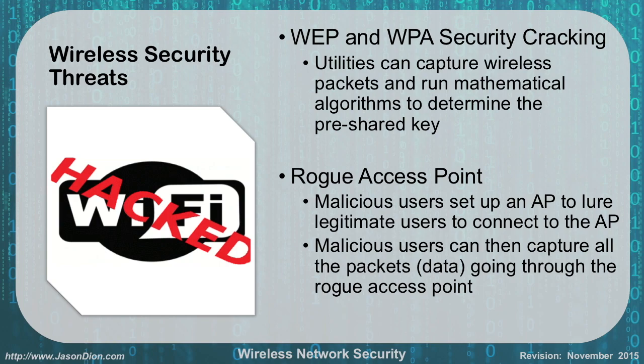Wireless threats — wireless security has many different threats. WEP cracking: wired equivalent privacy can be cracked using various utilities available for both WEP and WPA. These utilities capture wireless packets and run a mathematical algorithm to determine the pre-shared key — the secret password. For WEP, it usually takes three to five minutes on average.